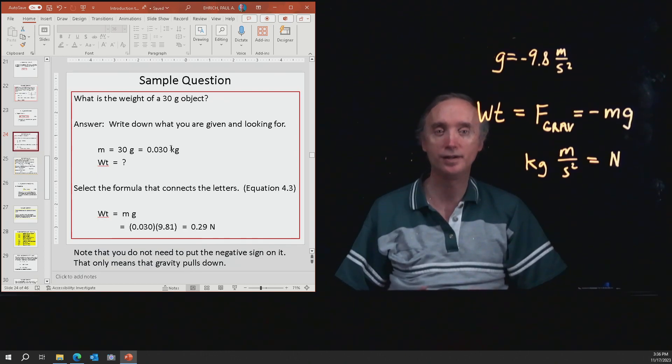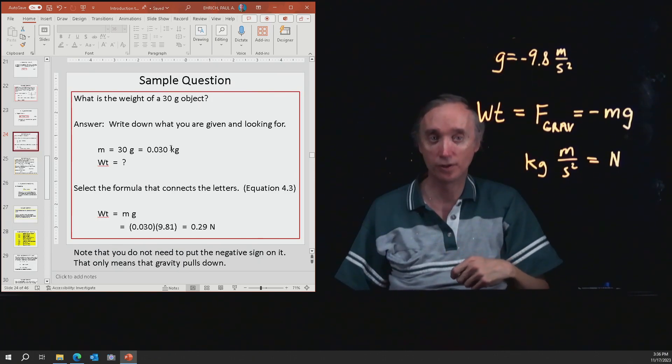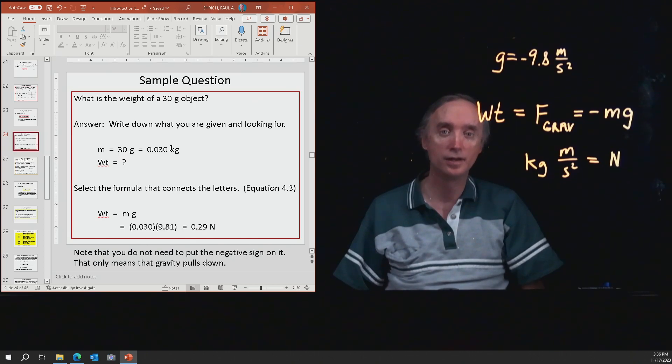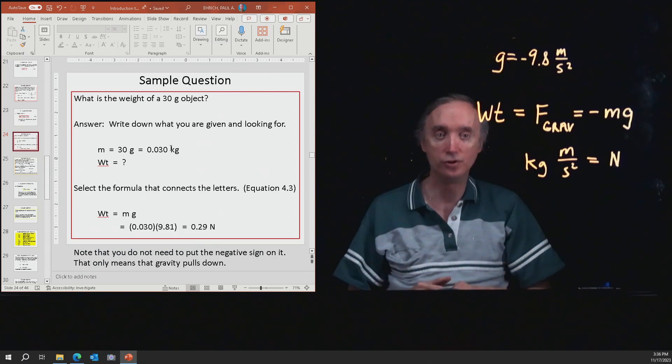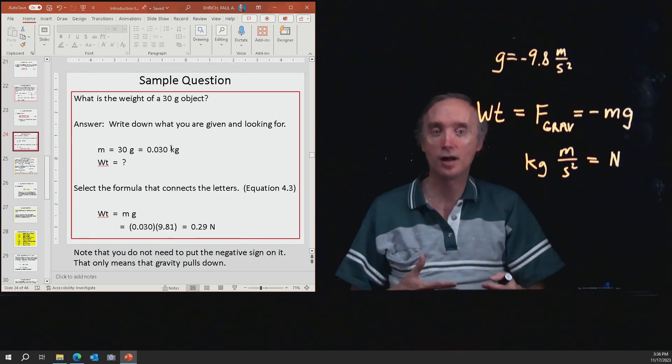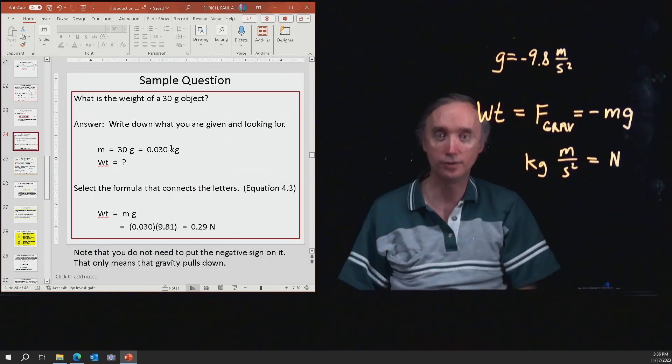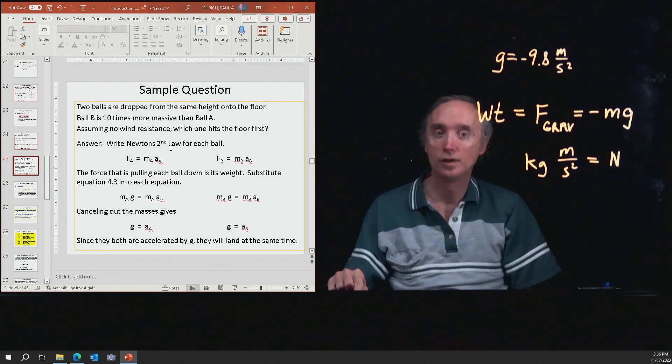And then also notice you don't need to put the negative sign on it. So you didn't need to say negative 0.29 Newtons. The negative just tells you the direction that the force is going in. So you'll notice that on your bathroom scale, it doesn't say that you weigh negative 140 pounds. It just says you're weighing 140 pounds, or you weigh 40 Newtons. So it gives you a positive number, and it's implied that the force of gravity pulls downwards on you.